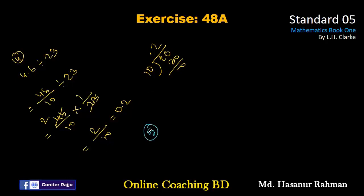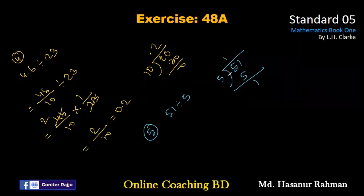Now number five says 51 divided by 5. If we want to divide 51 by 5: 5 into 5 is 1, then 1 cannot be divisible by 5, so we put a 0 and a point. This point represents a 0, so 5 into 10 is 2. So 51 divided by 5 should be 10.2.